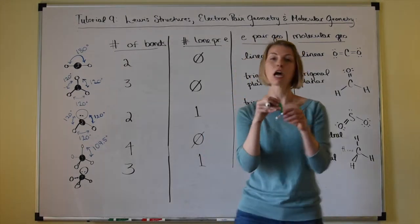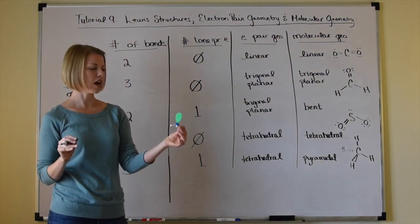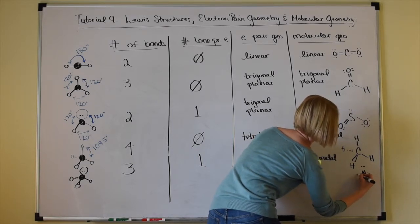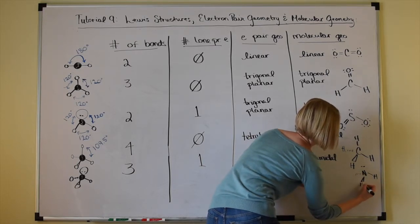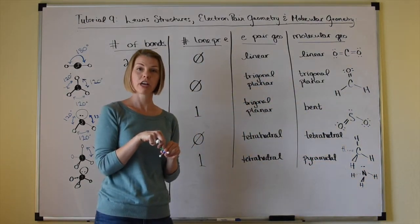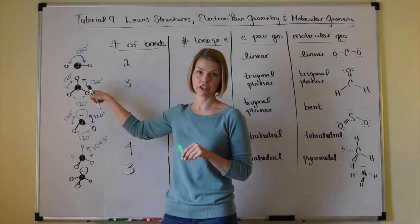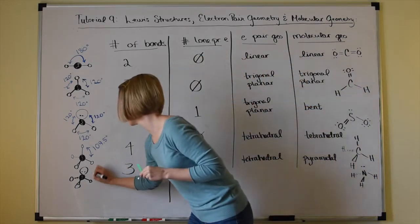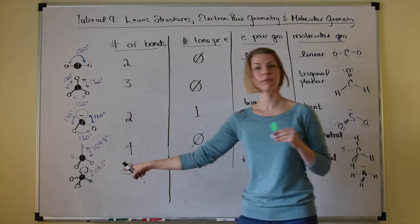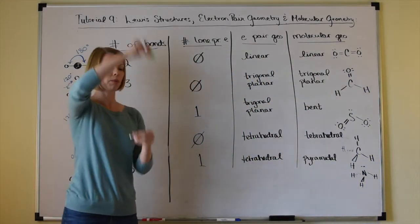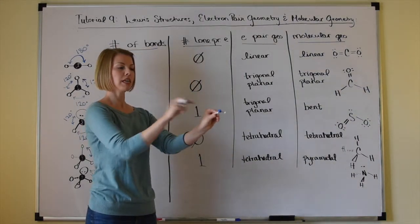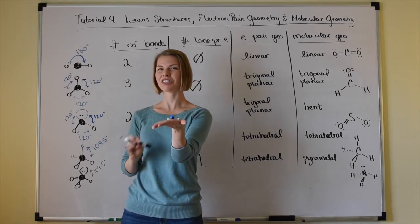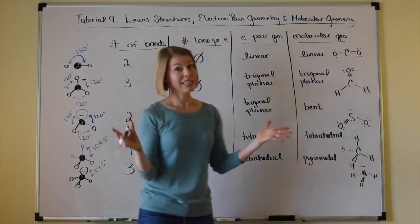Ammonia is a great example. Nitrogen has its lone pair of electrons with three hydrogens. If there were no lone pair and just three charge clouds, it would be trigonal planar. It is very important to recognize that the lone pair takes up its fair share of space, creating a 109.5-degree bond angle — tetrahedral electron pair geometry. But when we name the molecular geometry by looking at just the atoms, it has a pyramidal shape. Not flat, not trigonal planar — a little pyramid.